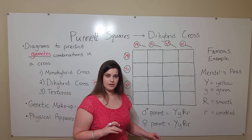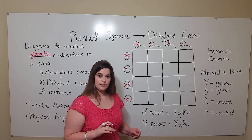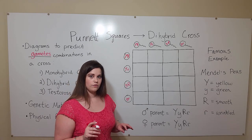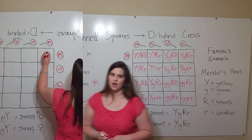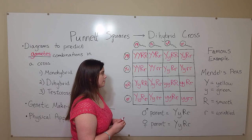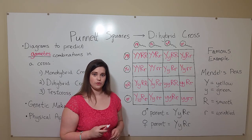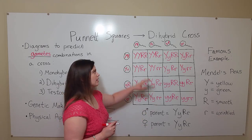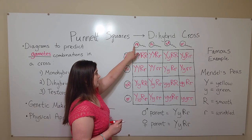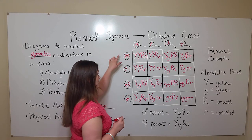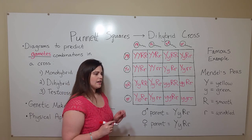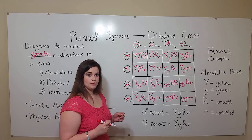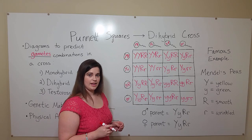If you're interested in learning more about the law of independent assortment, see my video on that subject. Now let's fill in the Punnett square for the dihybrid cross. We have filled in a Punnett square for a dihybrid cross, and you can see it looks a little complicated, but all I have done for each square is write in the alleles gotten from one parent and the alleles gotten from another parent. It is convention to always write the dominant allele first, as long as it is present, regardless of which parent it came from.